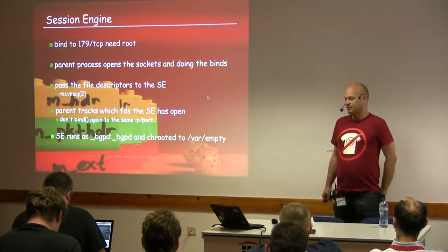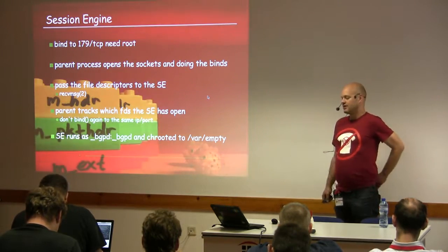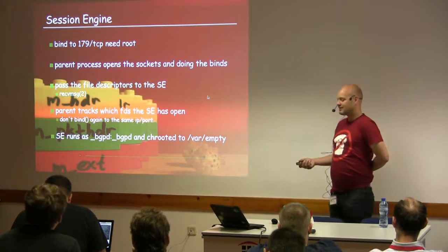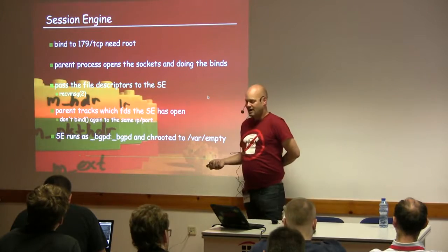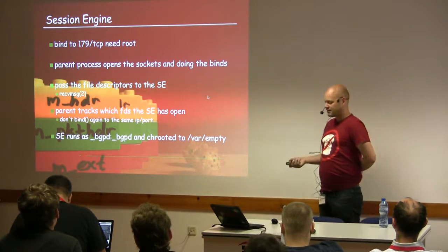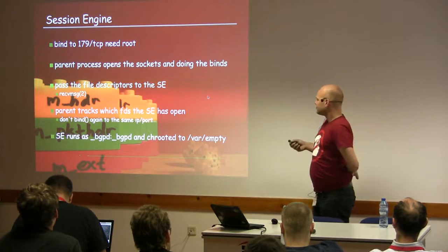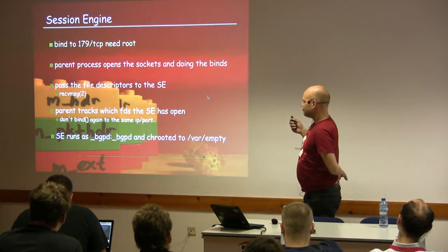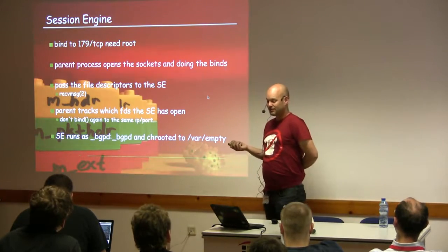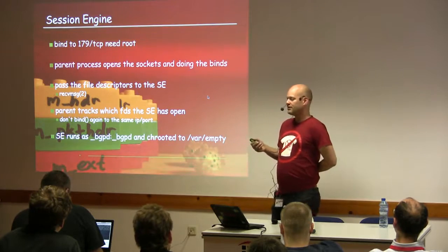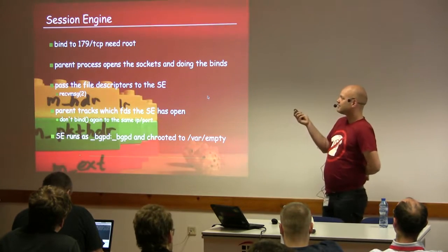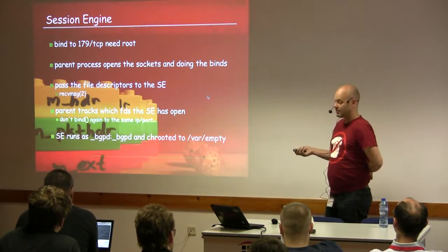Each process only has the privileges it really needs. When an unprivileged process needs a privileged operation, it asks the master process to do that. The session engine needs root privileges for one single operation: binding to TCP port 179. The parent process obviously needs root since it modifies the kernel routing table and IPsec flows. To bind to that low port, the parent creates the socket, binds to it, and uses file descriptor passing to send the socket over to the session engine.